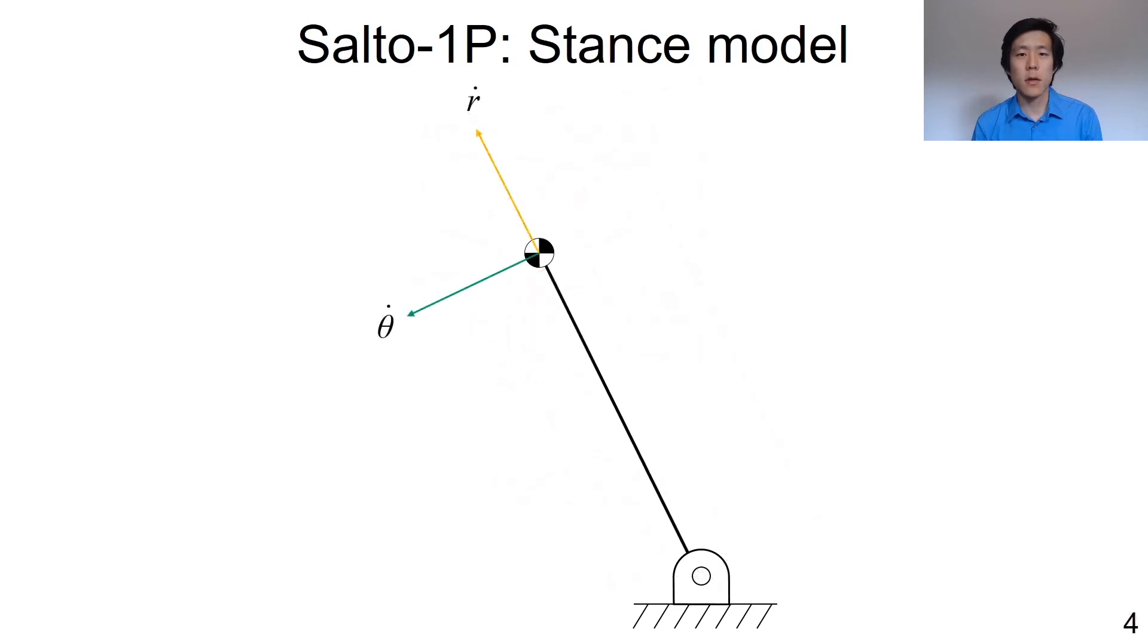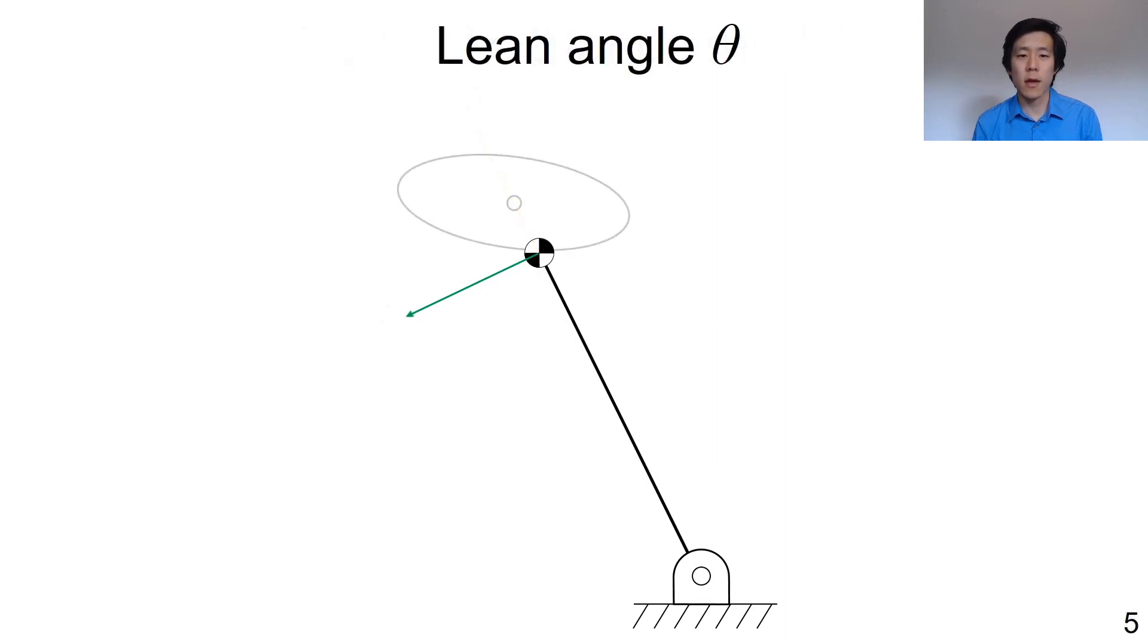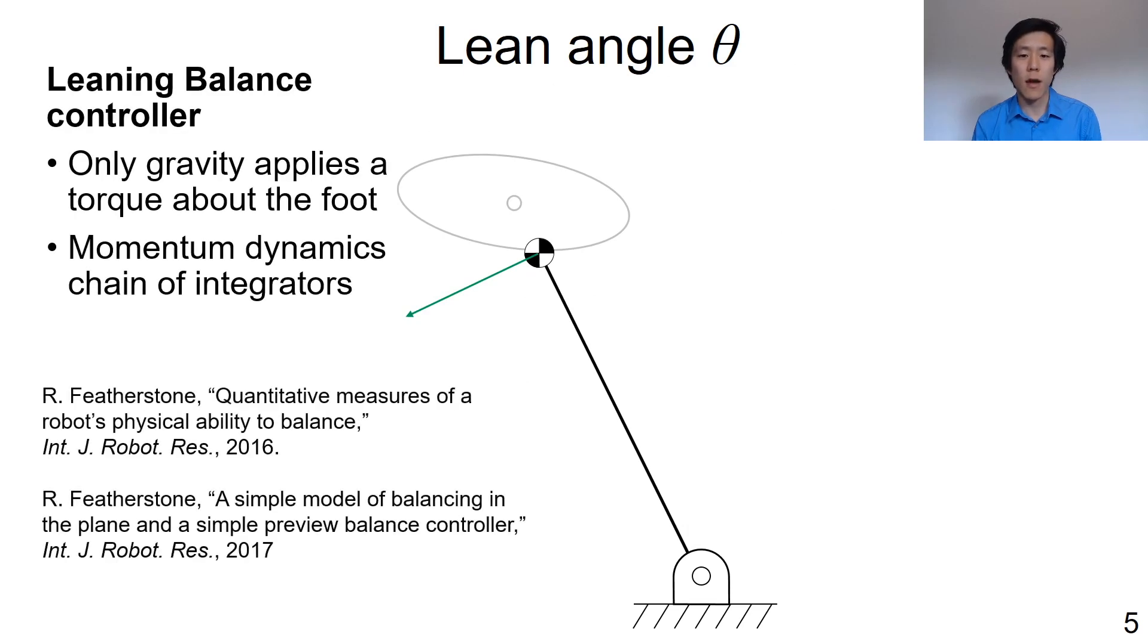We break up the control of the robot's center of gravity motion into two parts, the radial component and the lean angle. Lean angle theta is controlled by the reaction wheel tail. Our leaning controller for this work is based on previous work in balance control. A key insight is that the only torque applied about the robot's foot is due to gravity. Therefore, the dynamics for the leaning motion can be written simply in terms of the angular momentum of the robot about its contact point with the ground, and the first three derivatives of this angular momentum.